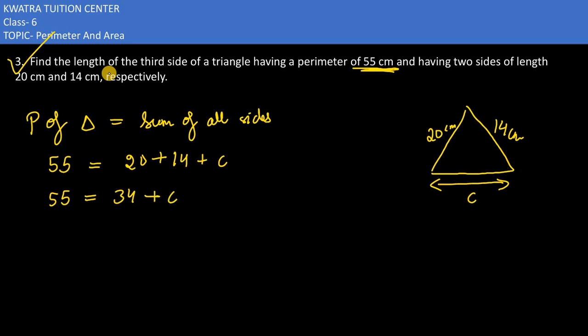We have to take the third side to the left side. It would be 55 minus 34 is equal to c. Now subtract the values.